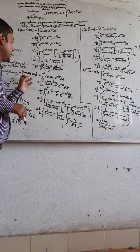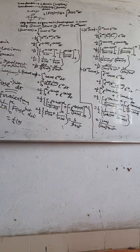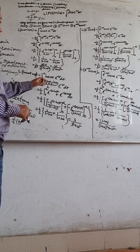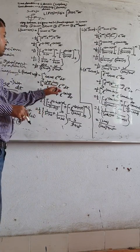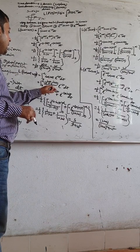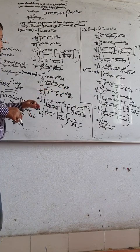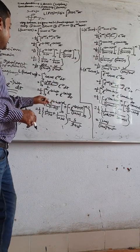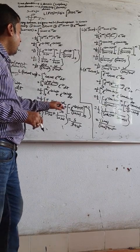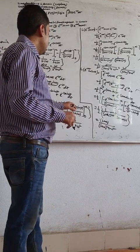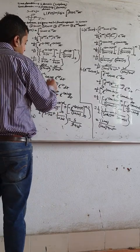Now let's perform the Laplace transform of cosine of omega t times u(t). The integral from 0 to infinity of cosine(omega t) times e to the power minus st dt. Cosine of omega t equals e to the power j omega t plus e to the power minus j omega t divided by 2. After multiplying by e to the power minus st and integrating, combining exponents gives e to the power minus (s minus j omega)t plus e to the power minus (s plus j omega)t, divided by 2, with limit 0 to infinity.